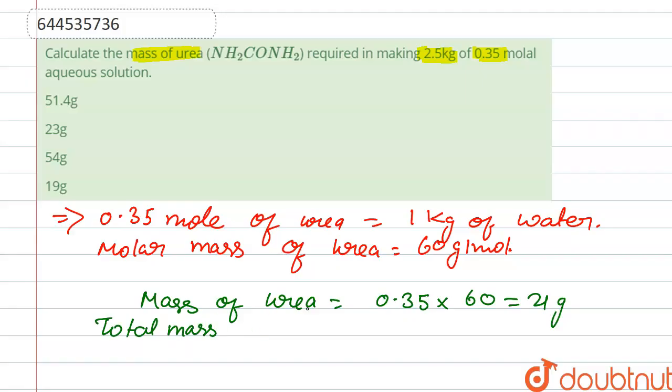Total mass of solution, because we have to find out the mass of solute and solvent. Mass of solution is equal to 1000 plus 21, which is 1021 gram, and we can also write this as 1.021 kg.